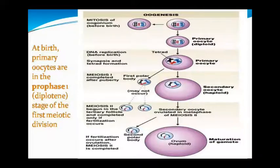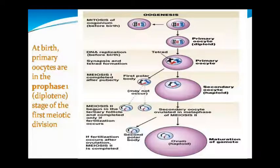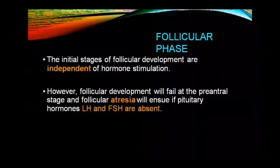Tertiary follicles and completed meiosis II only occur when fertilization takes place. The secondary oocyte, which is haploid, is ovulated at metaphase II of meiosis II. If fertilization occurs, meiosis II is completed, producing the second polar body and the mature ovum, which is haploid.